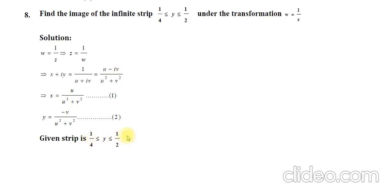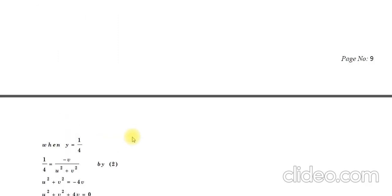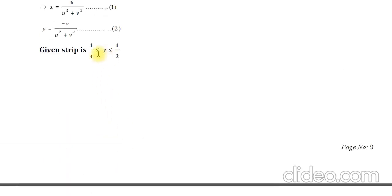See, this is the given strip: 1/4 ≤ y ≤ 1/2. So I am doing like this. If y = 1/4, see geometrically what it defines - it is the region between y = 1/4 and y = 1/2. Geometrically it is nothing but the region between y = 1/4 and y = 1/2, the entire area covers.